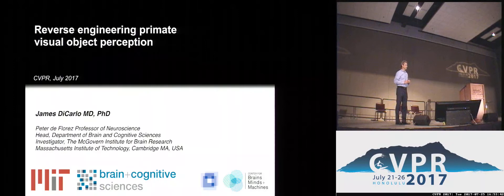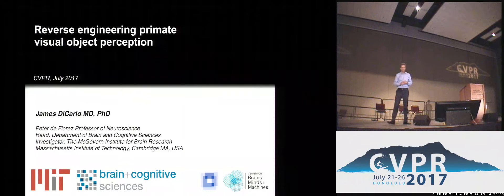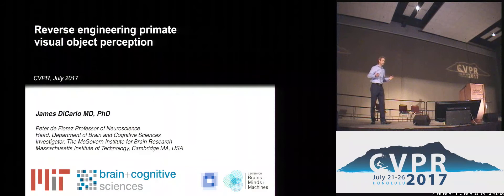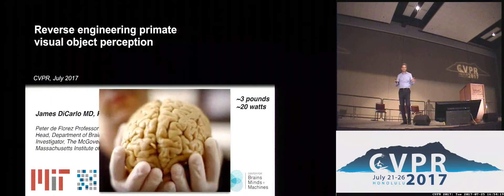Thank you, Yang Ji, for that kind introduction. I'd like to thank the organizers for inviting me to come and speak to all of you. This is really a great opportunity to convey some of what we do in our lab, in our field, to what you're doing here. I must say I'm a bit of an outsider. As you heard from Yang Ji, I'm not classically trained as a computer vision scientist — I'm a neuroscientist. Most of the views I'll tell you about neuroscience aren't necessarily reflective of all of neuroscience, but I hope to be an ambassador between our two fields.